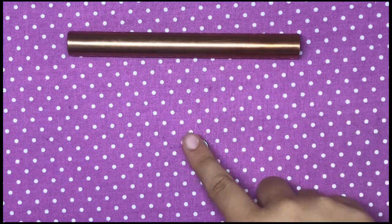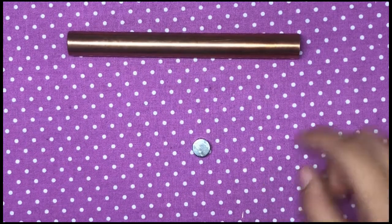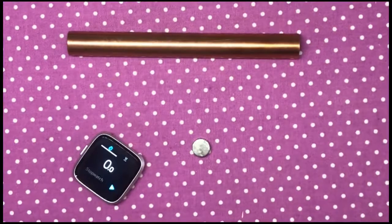For the different lens kit, you're going to need a copper tube and a magnet, and a stopwatch.